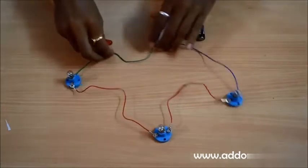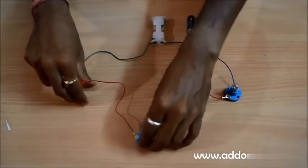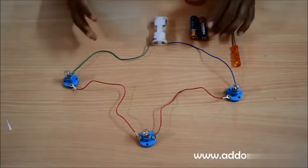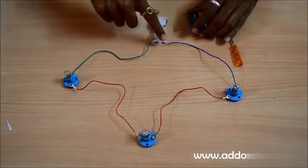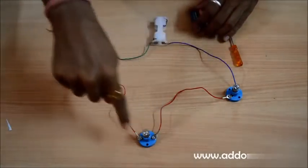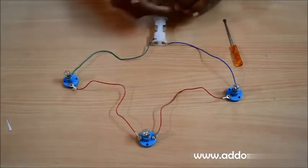So this basically completes my circuit and as we have seen in the first video on electricity, which is how to make a simple circuit, my circuit is complete because it is in a complete loop and there are no gaps left.